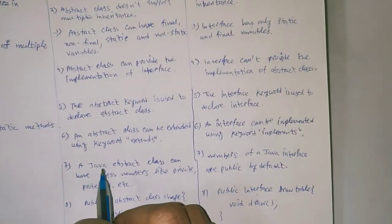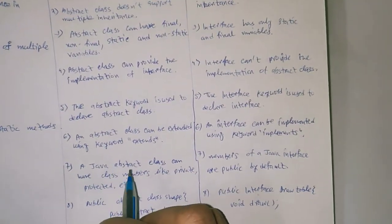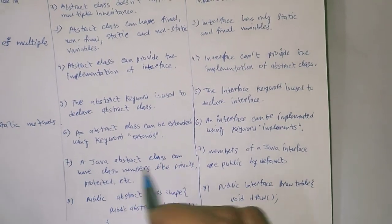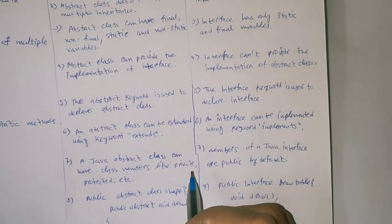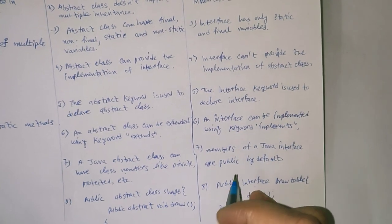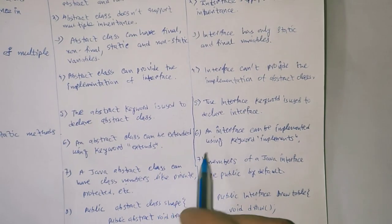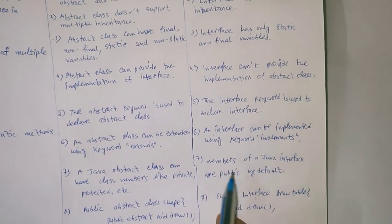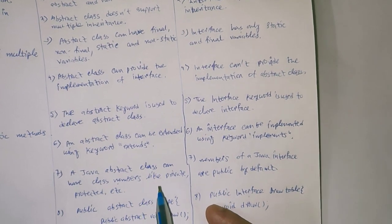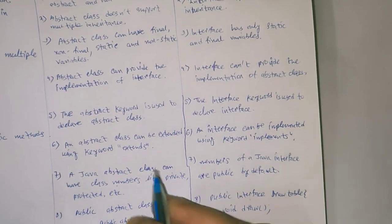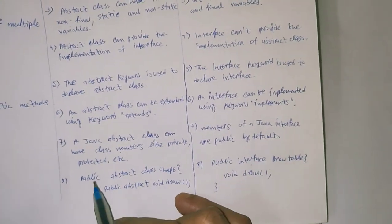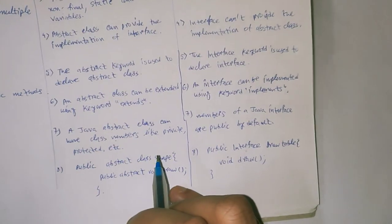A Java abstract class can have class members like private and protected. Members of a Java interface are only public, whereas abstract class members can be private or protected.